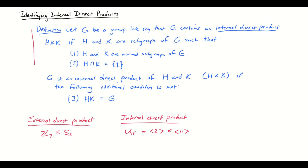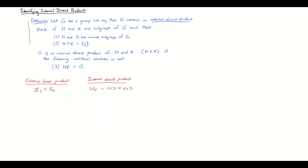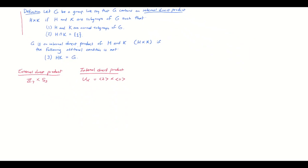Now the thing I want to do in this video is show that if we have an internal direct product, what we see there really is a direct product — it has all the same group structure as an external direct product as defined in previous videos. So here's the theorem we're going to prove.